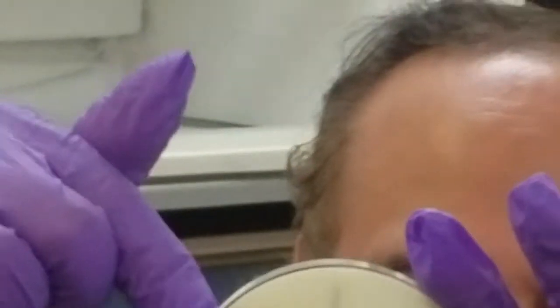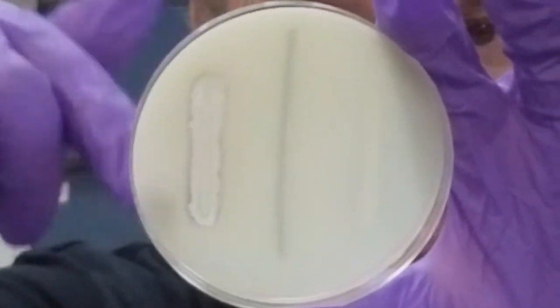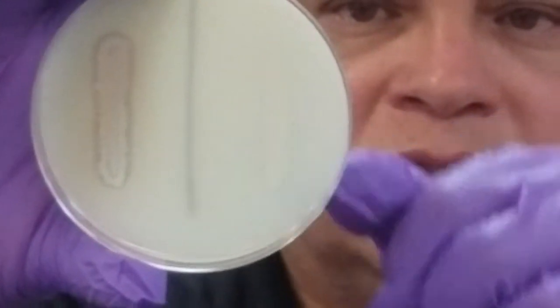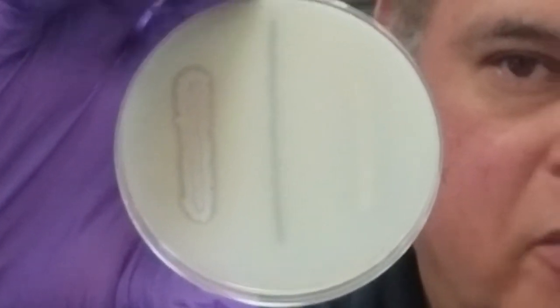There's a clearing around the colony, whereas this one is Staph aureus, and you can see that there isn't any clearing around the colony.